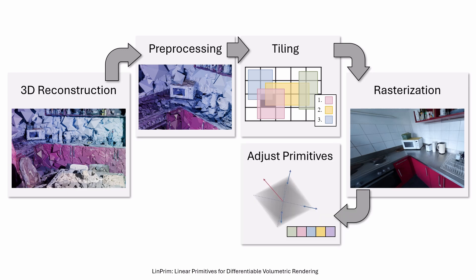For optimization, gradients originate from the pixel-wise differences to a known view. They flow through the blending process and onto the color contributions, which are in turn dependent on the intersections, and thus the center and corner positions of each primitive.